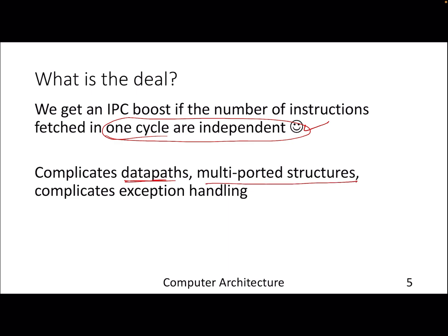Having said that, superscalar complicates the data path. Imagine a register file — previously it had read and write ports for a single instruction; now imagine if multiple instructions are in the pipeline and they demand more ports for the register file. Similarly, the other data path structures are also complicated. Exception handling becomes tricky with a superscalar processor because you have to make sure that the precise state is still maintained even though you are fetching multiple instructions in one go.